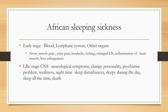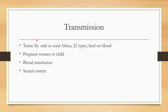In the late stage, the parasites invade the central nervous system, leading to neurological complications including personality changes, psychosis, weakness, and sleep disturbances — sleeping during the day — which is why it is called sleeping sickness. Other transmission routes include mother-to-child during pregnancy, blood transfusion, and sexual contact. The best prevention is controlling the tsetse fly.